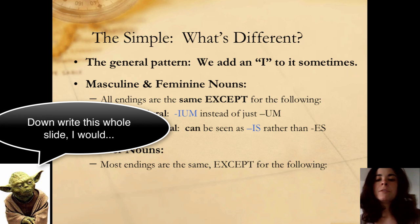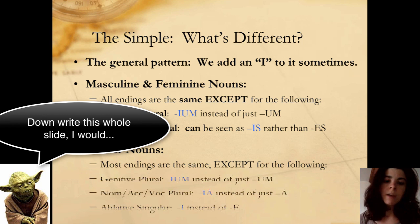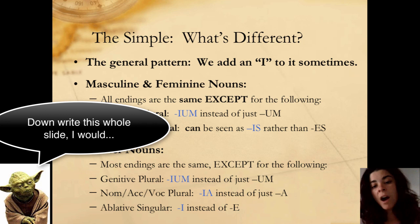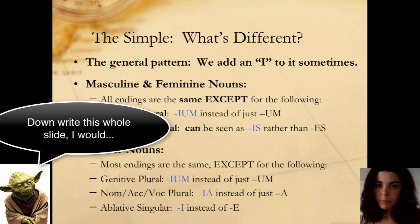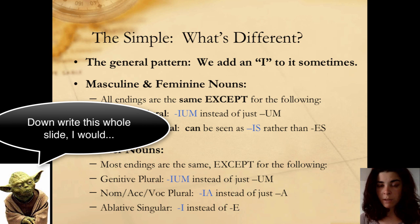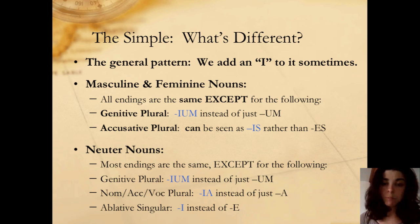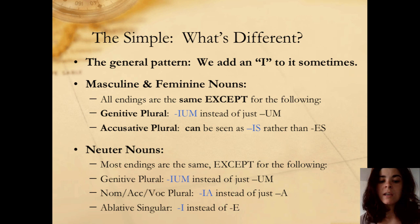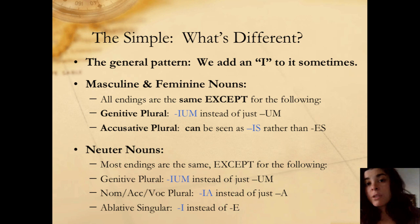Neuter nouns do have a little bit more of a tweak, but it's still mostly the same, except for genitive plural — again, you'll have IUM instead of just UM. The nominative, accusative, and vocative plural is going to end in IA instead of just A. The ablative singular is the one to really make note of — star this in your notes and highlight it — because it will end in I instead of E. So I is now going to be an option for that ablative ending.